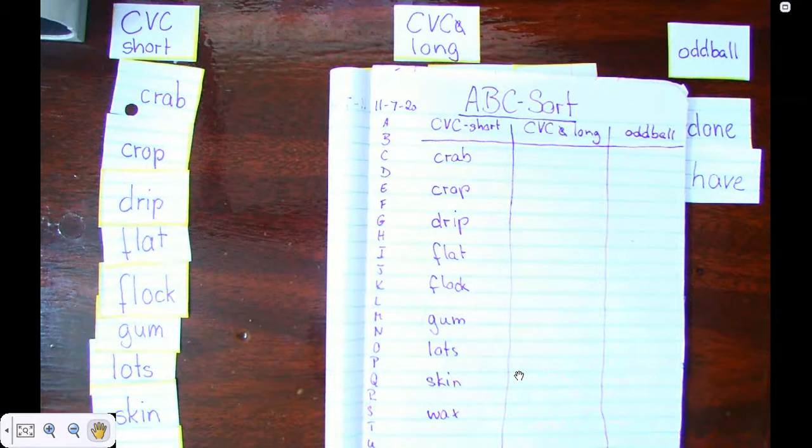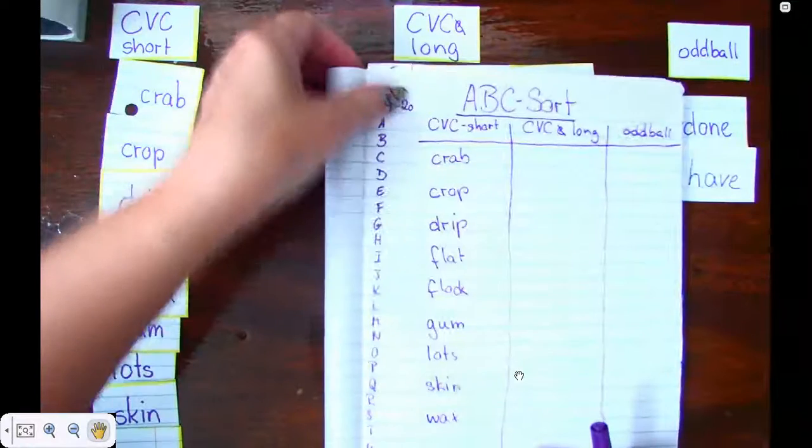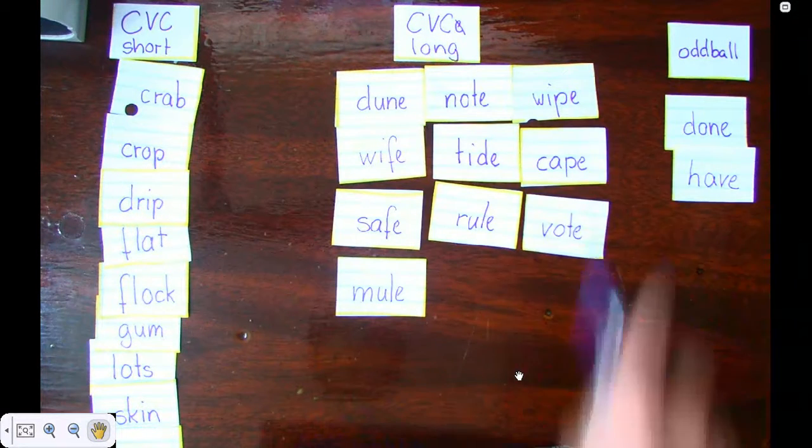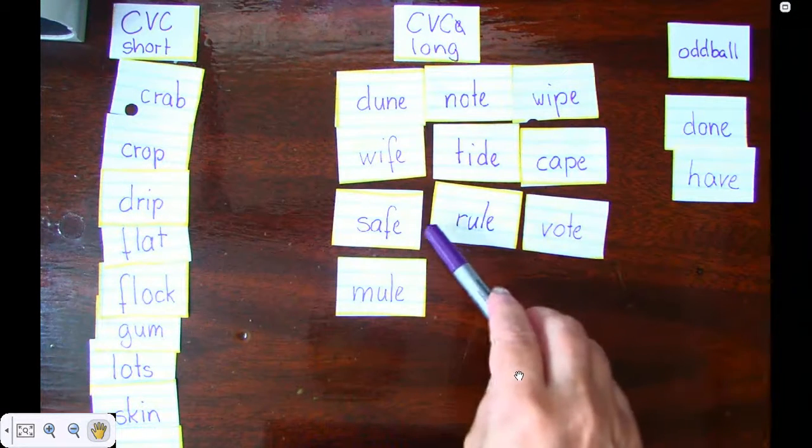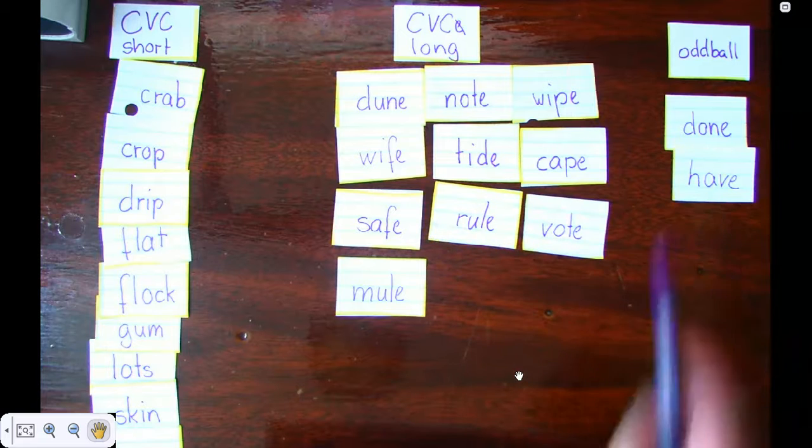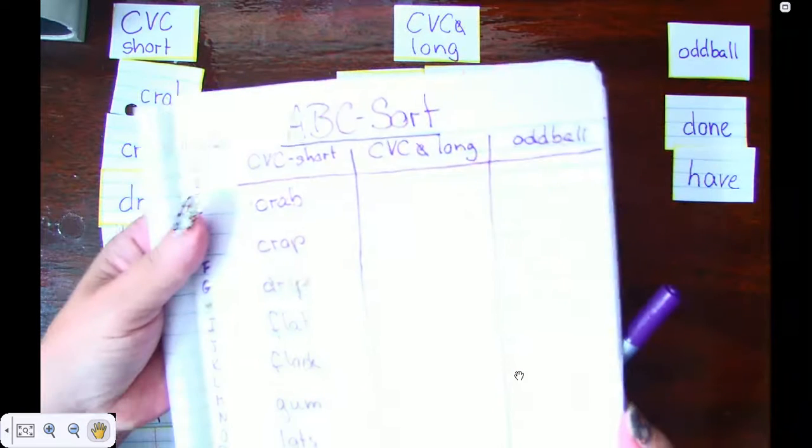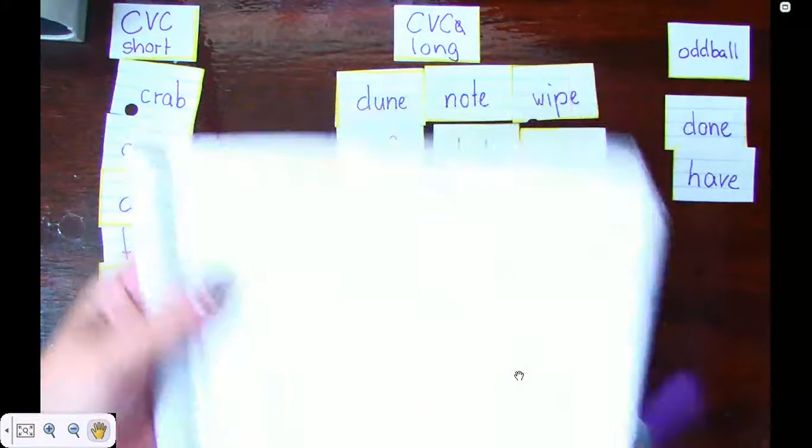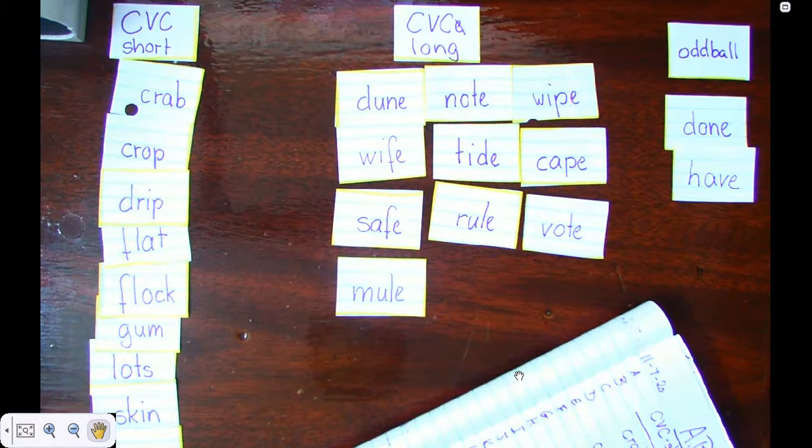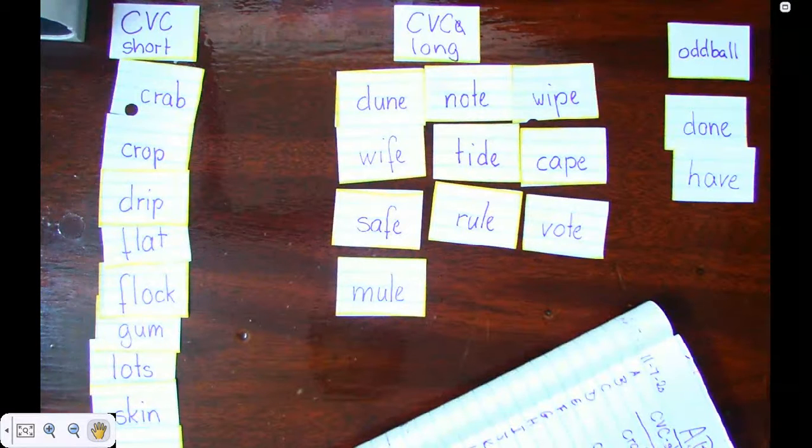Now that I've done my first column, I need you to go ahead and sort your second group of words, your long vowel words, and then sort your oddball and write them down in your handy dandy notebook. Take a picture of it and post it on ClassDojo so I can see how awesome you did on your sort. See you next time my little friends.